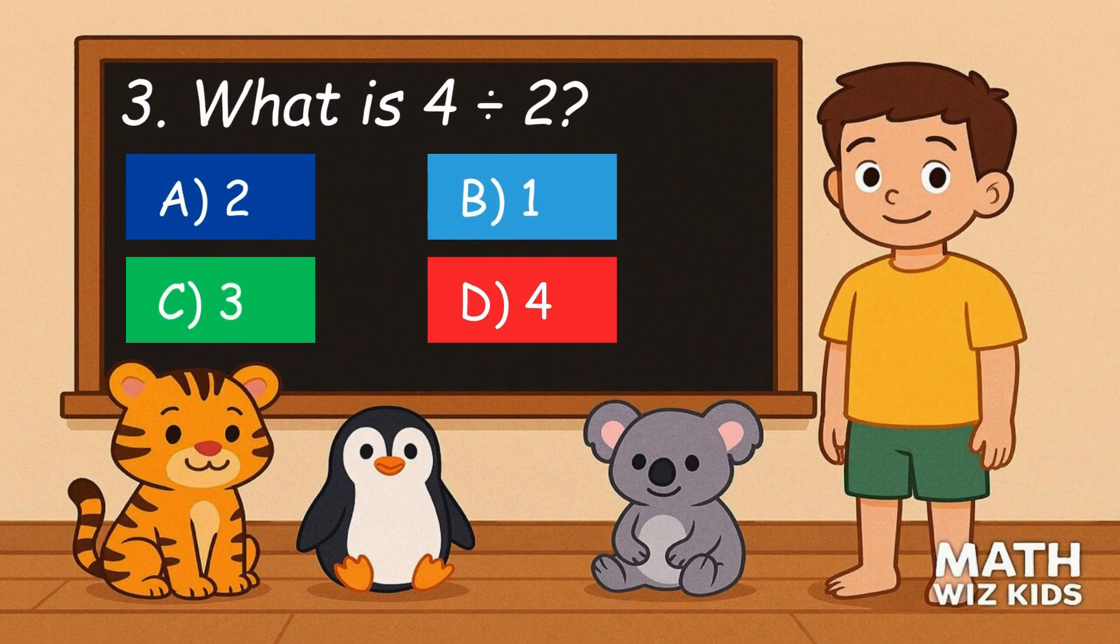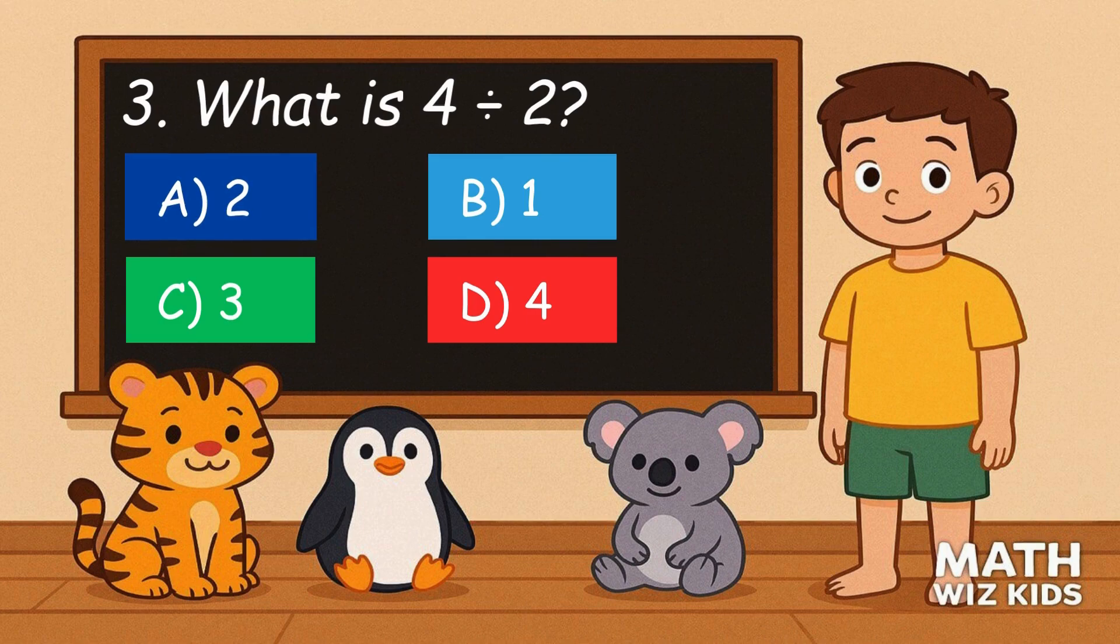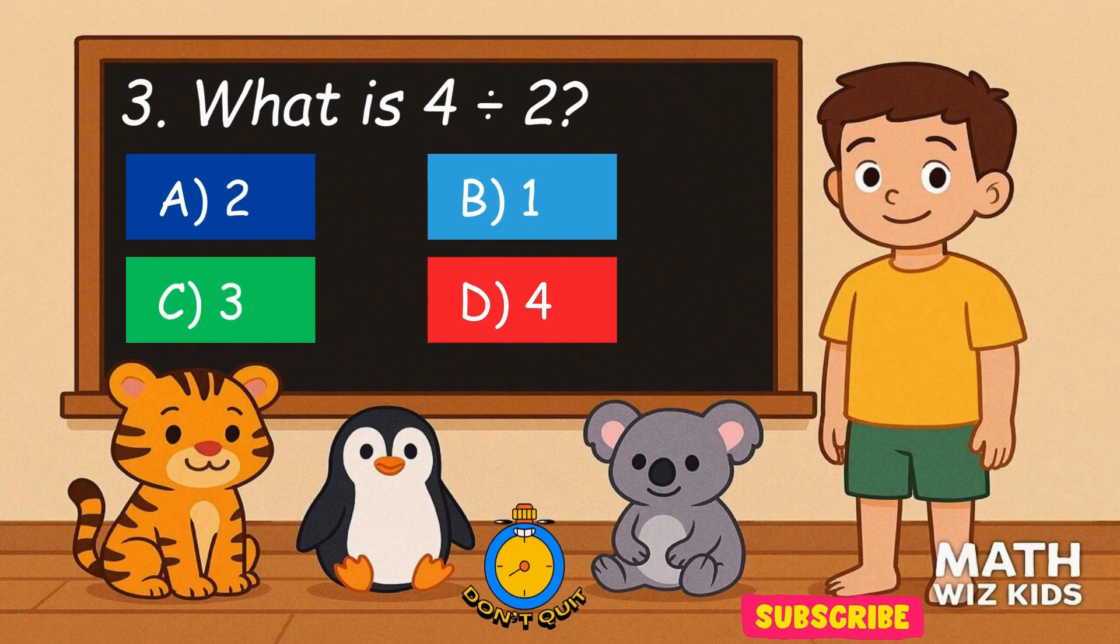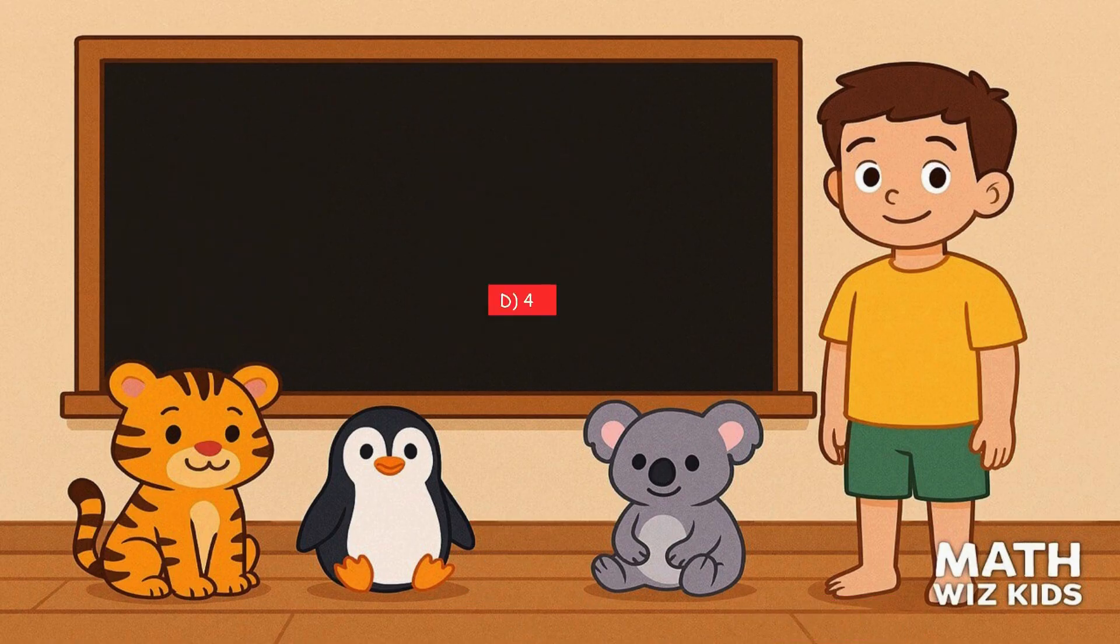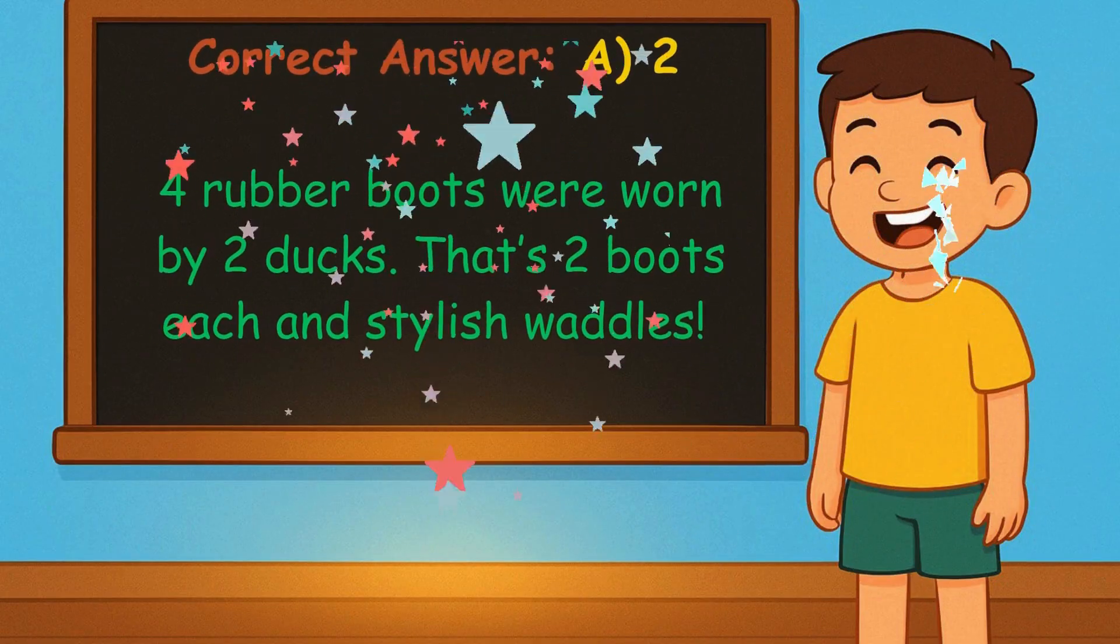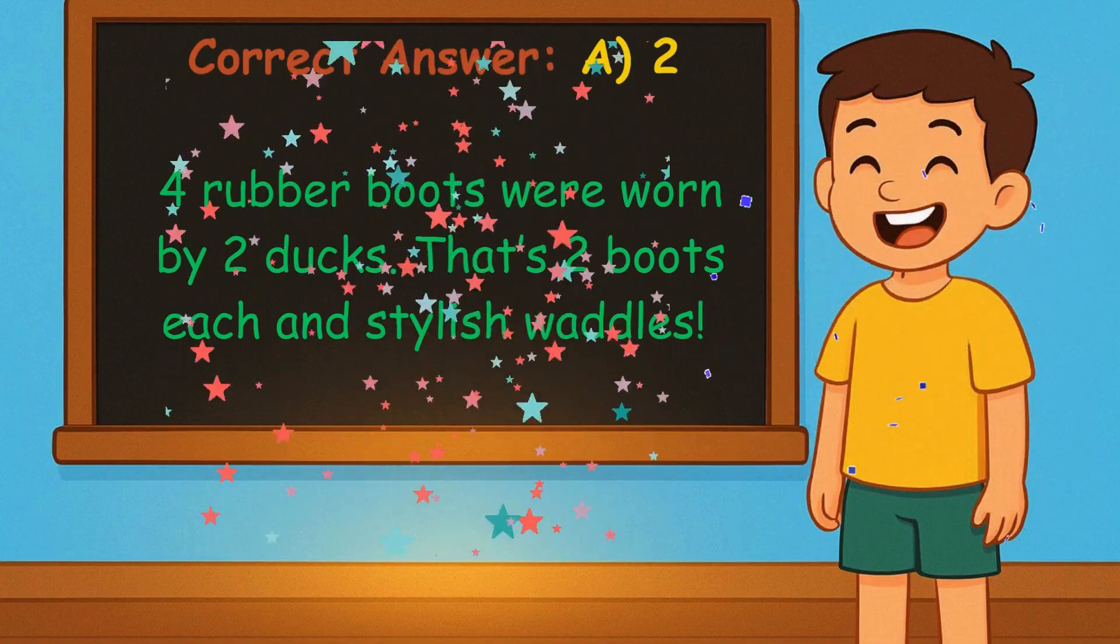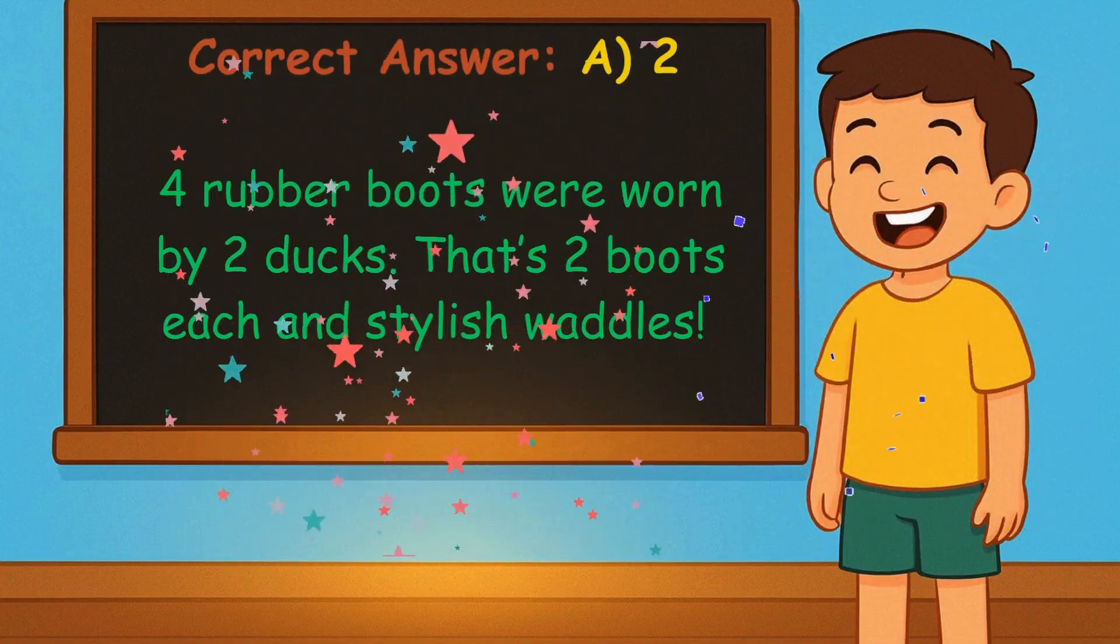3. What is 4 divided by 2? Is it A, 2, B, 1, C, 3, or D, 4? Correct answer is 2. Two ducks with 4 rubber boots, 2 boots each, and stylish waddles.